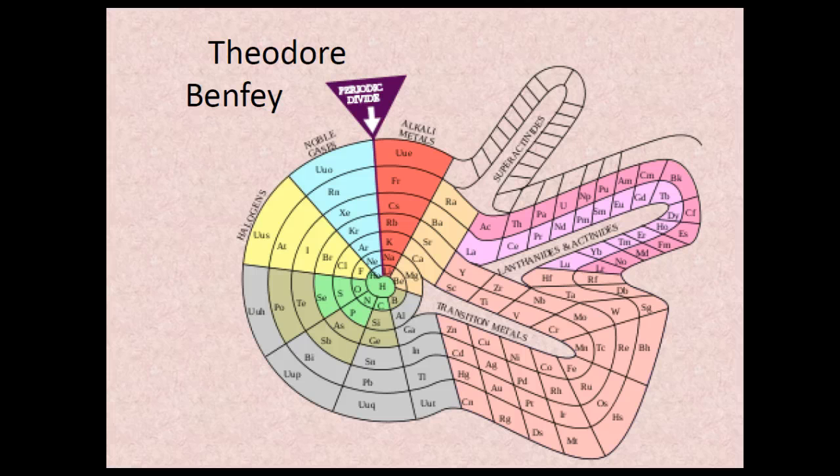And here is one that has the lanthanides and actinides pulled out separately. All the transitions or short stack elements are on the right here. And it also starts in the center.